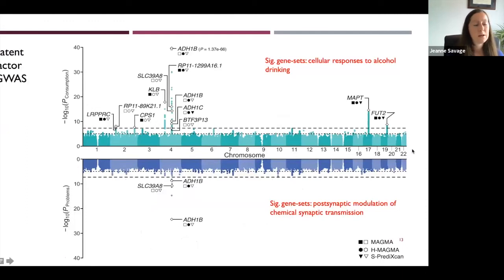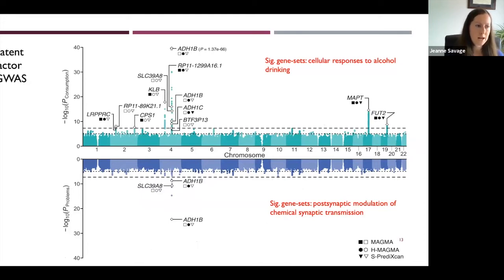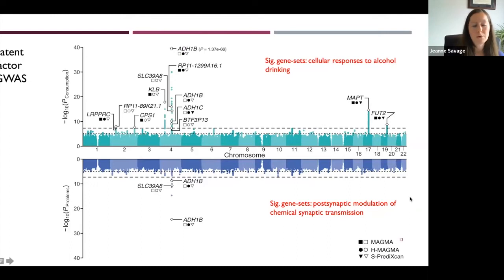We carried those two latent factors forward into their own GWASs — the consumption factor in blue and the problems factor in purple. We found several novel genomic loci for the consumption factor — loci that were not significantly associated when we just took a sum score of the three consumption items. There was a real difference when appropriately weighting those items. The association for the consumption factor was enriched primarily in genes associated with cellular responses to alcohol, while the problems factor was enriched in genes related to synaptic transmission.